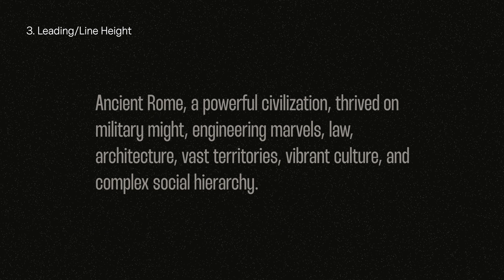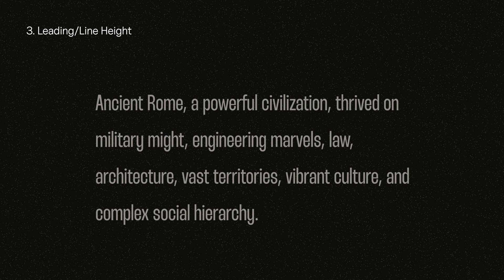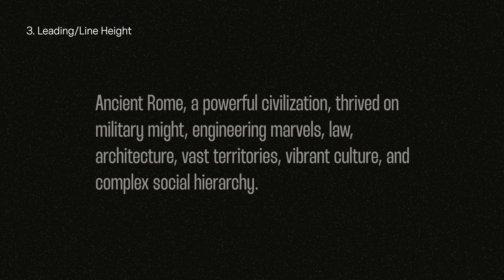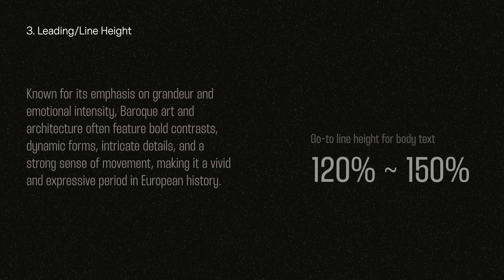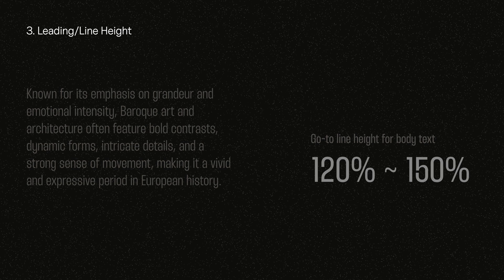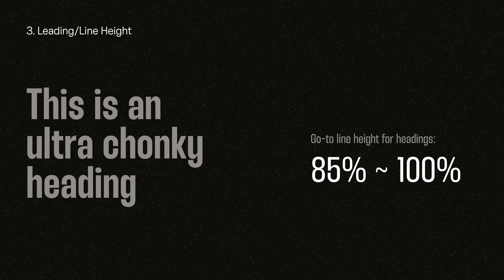Leading, or line height, is the vertical distance between lines of text in a paragraph. For leading, it's important to get it right. For body text, I usually use between 120% to 150% to ensure the best readability. And for headings and titles, I usually use a tighter line height or leading between 85% to 100% so that they don't look too spaced out.